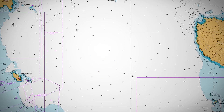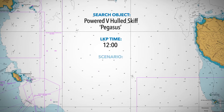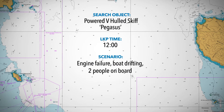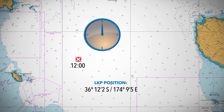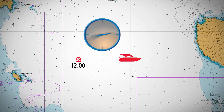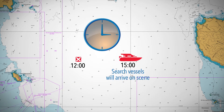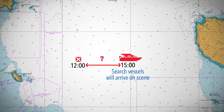Let's pretend a powered V-hulled skiff named Pegasus radioed at 1200 hours to say they've had engine failure and the boat is drifting. We have coordinates for their LKP at 1200 hours, and the search and rescue unit is expected to be on scene at 1500 hours. So we need to predict the drift line and datum for the three hours between 1200 and 1500.